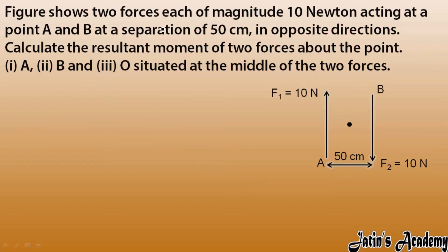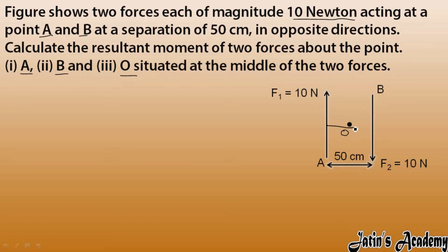A figure shows two forces, each of magnitude 10 Newton — this is an example of a couple — at points A and B separated by 50 centimeters, in opposite directions. We have to calculate the resultant moment of force about points A, B, and O, where O is situated at the middle.